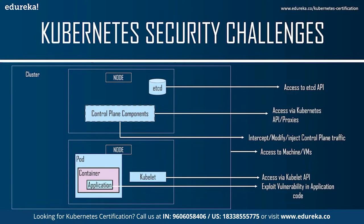Attackers can intercept, modify, or inject control plane traffic; they can access the machines or VMs; access via the kubelet API; and exploit vulnerabilities in application code. All these security risks can cause a great deal of data loss or information leakage from your organization, resulting in a huge loss.